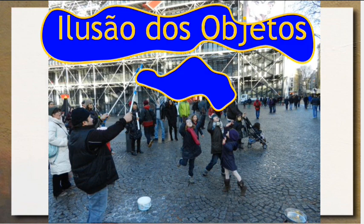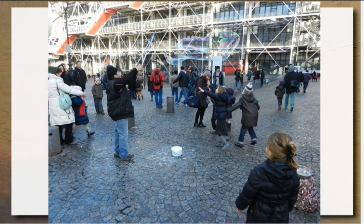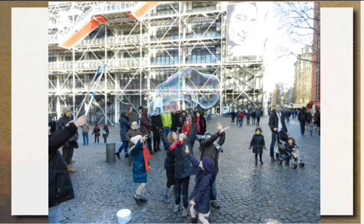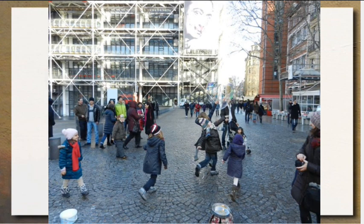O que é essa ilusão dos objetos? Quando nós interagimos com o mundo, a gente interage com fenômenos que são dinâmicos — as coisas constantemente mudam, têm novas formas. Você pode imaginar essas crianças indo atrás de uma bolha. E o que é, na verdade, uma bolha? Uma bolha é um efeito efêmero — é um efeito que acontece pela interação do ar com água e sabão, e vai evoluindo no tempo e no espaço. Mesmo que não seja, em si, um objeto autônomo, a gente vê esse fenômeno e trata esse fenômeno como objeto.